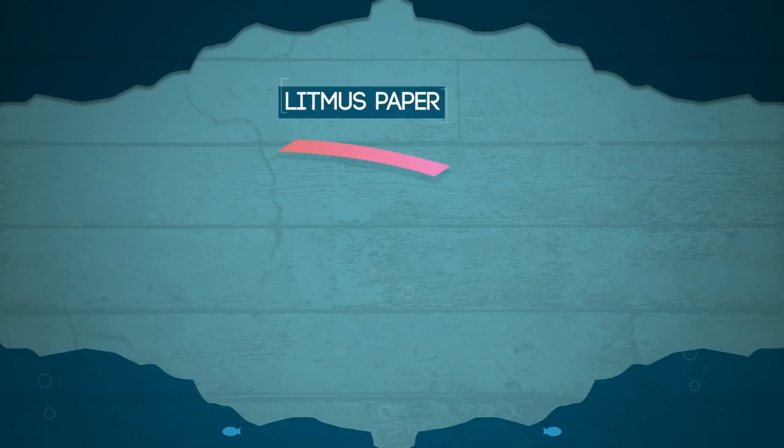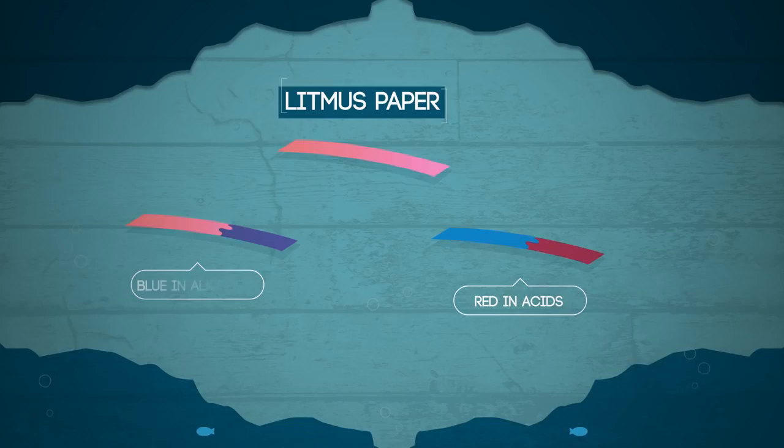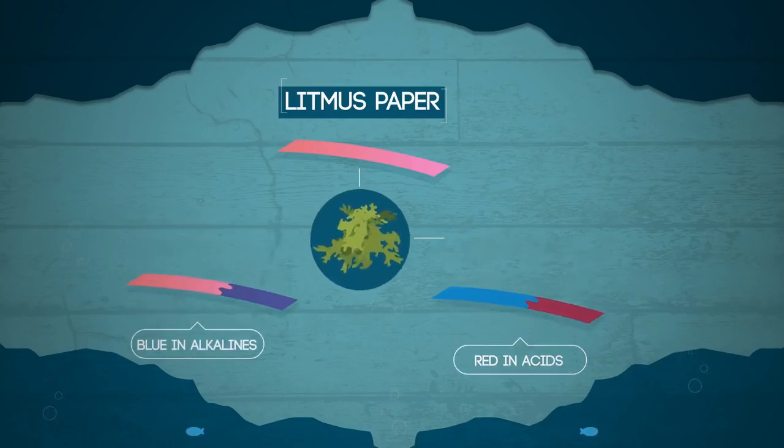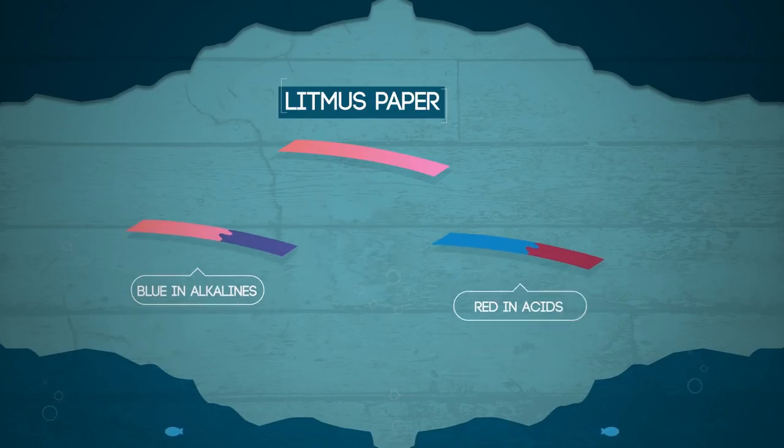Litmus paper is a simple indicator that tells us whether something is acid or alkali. Litmus is red in acids and blue in alkalis. Litmus paper is made from lichens which have been used to dye cloth for hundreds of years. It can be used as a liquid or paper, though the paper is easier and more reliable.